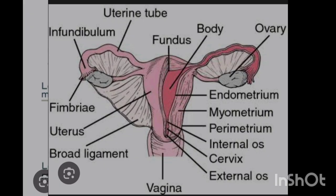All the external genitalia structures are collectively known as the vulva. Moving to the internal female genitalia — found inside the pelvis — this consists of the vagina, uterus, two ovaries, and two fallopian tubes. These structures are found between the urinary bladder, which is located anteriorly, and the rectosigmoid colon, which is located posteriorly.